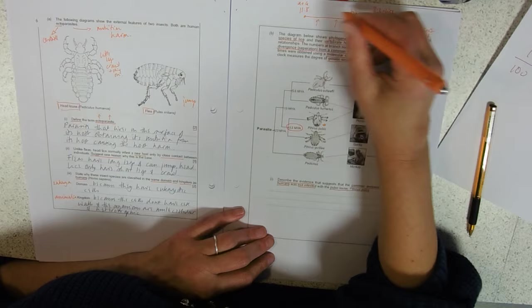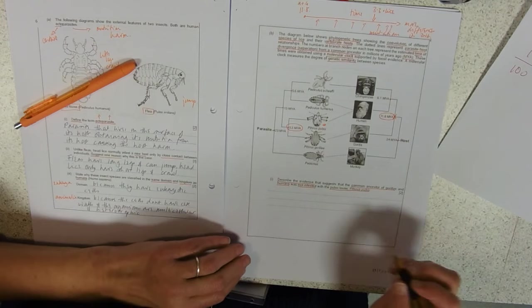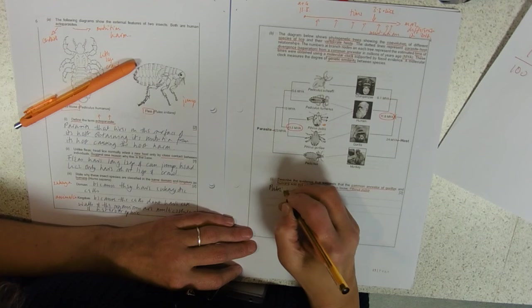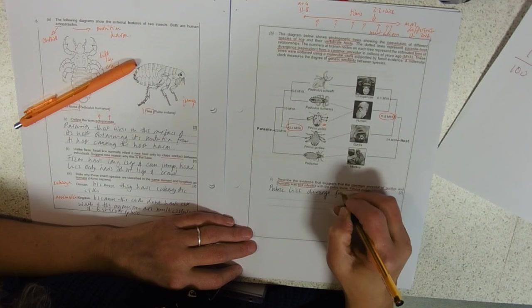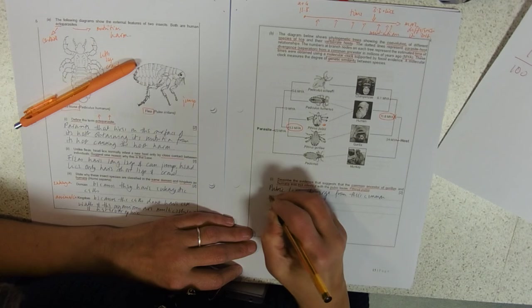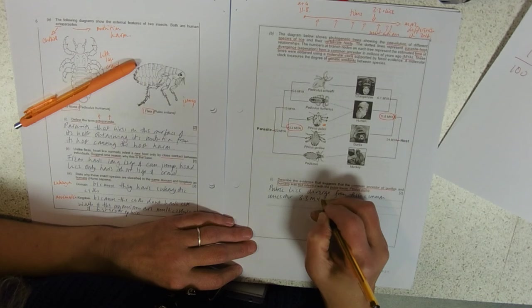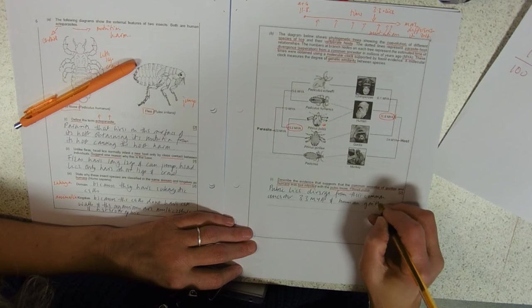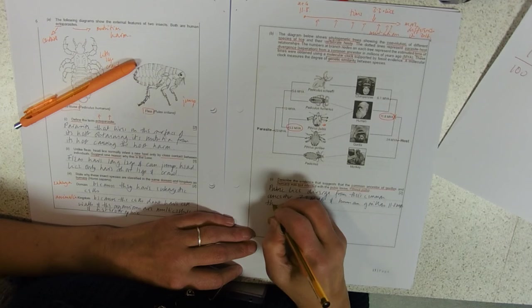This is the bottom line. Describe the evidence. Pubic lice diverge from their common ancestor 3.3 million years ago, and humans and gorillas 11.8 million years ago. This means the common ancestor of humans and gorillas is not alive at the same time.